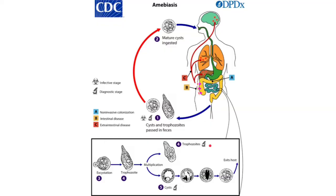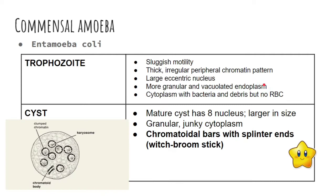For the life cycle, there are only two stages: cyst or trophozoite form. The cyst is the infective stage and can be ingested through contaminated food or water, causing infection. Entamoeba histolytica is the only pathogenic amoeba — the rest of the entamoebas and other species are commensals that do not normally cause disease.